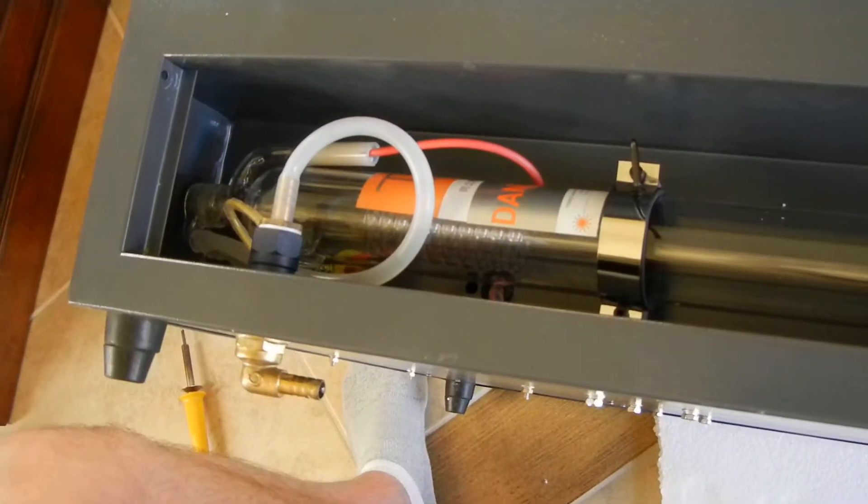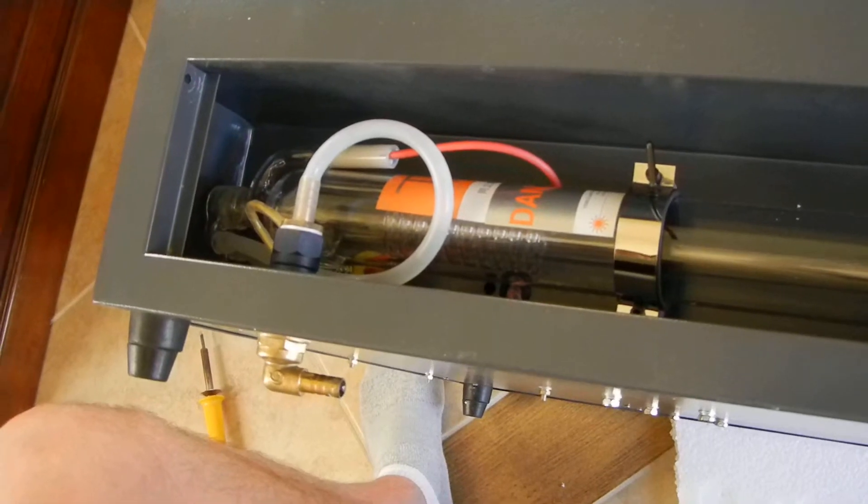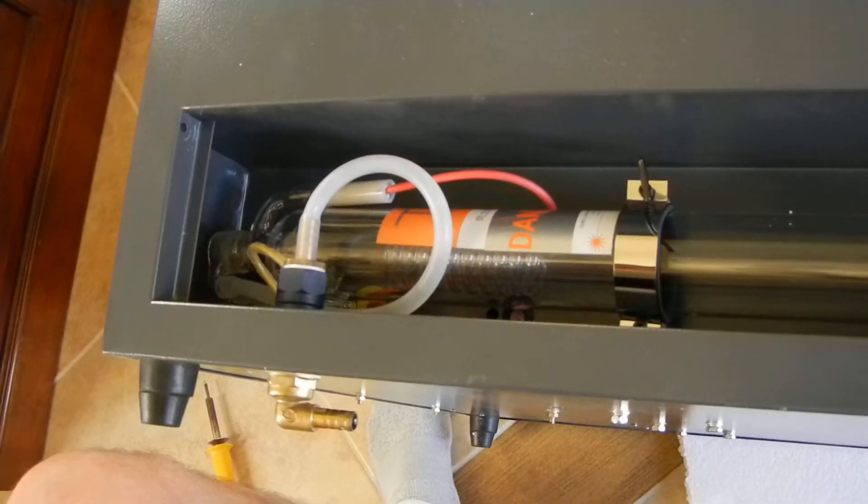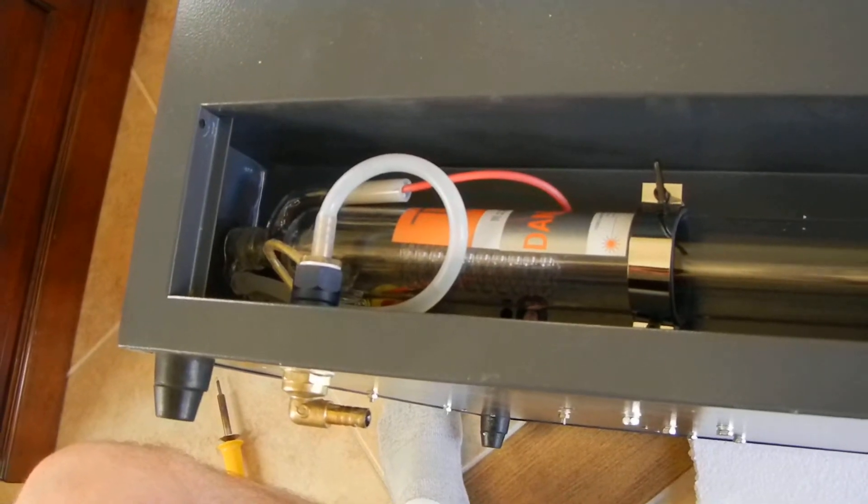This video is property of MBKP International LLC. In this video we're going to show you how to change a laser tube on our CO2 laser engravers. This one here is the 3060U. Most of them are pretty similar.